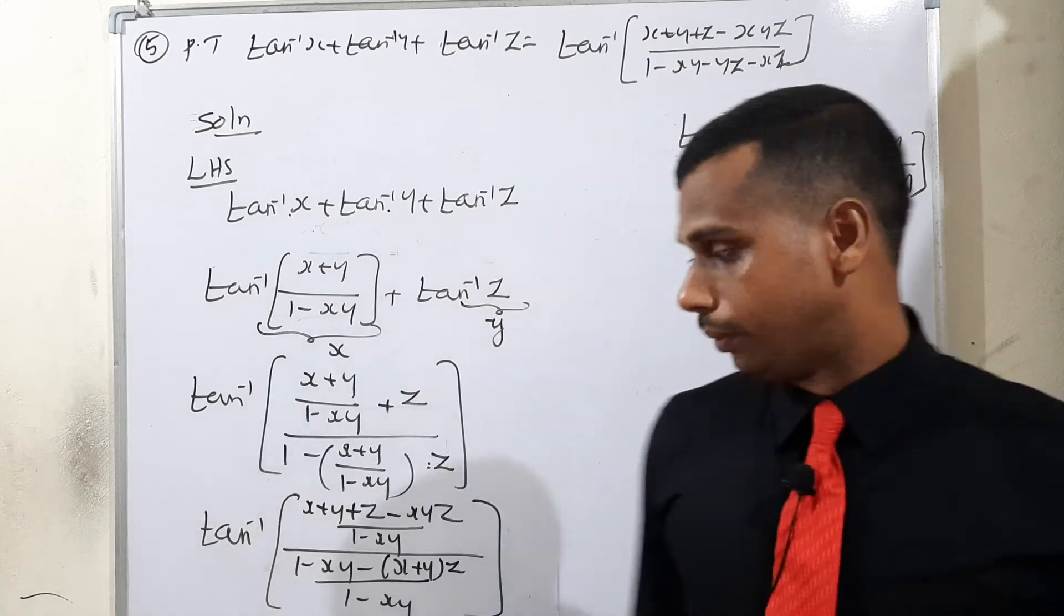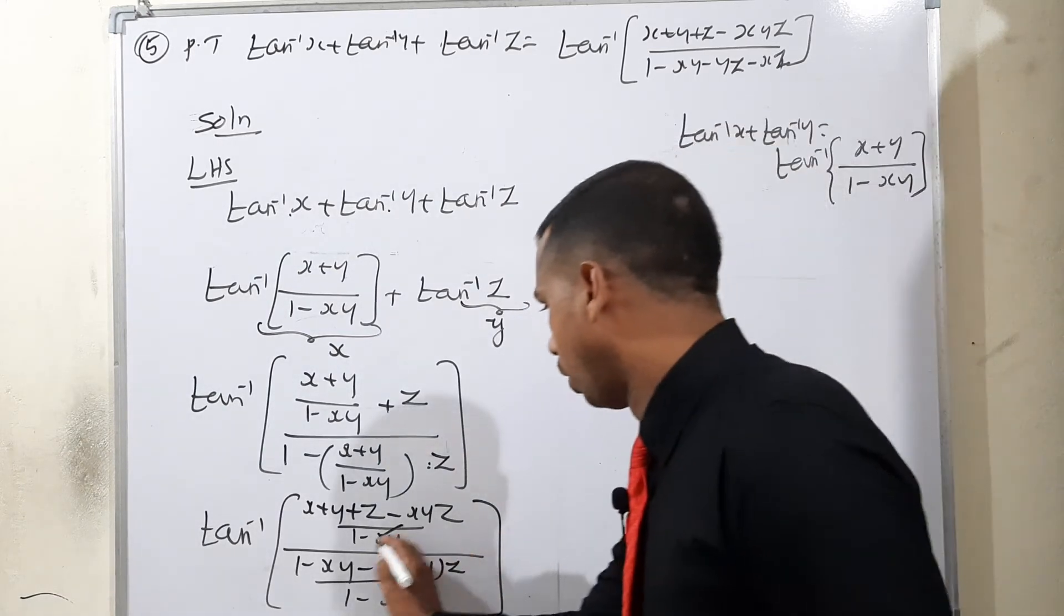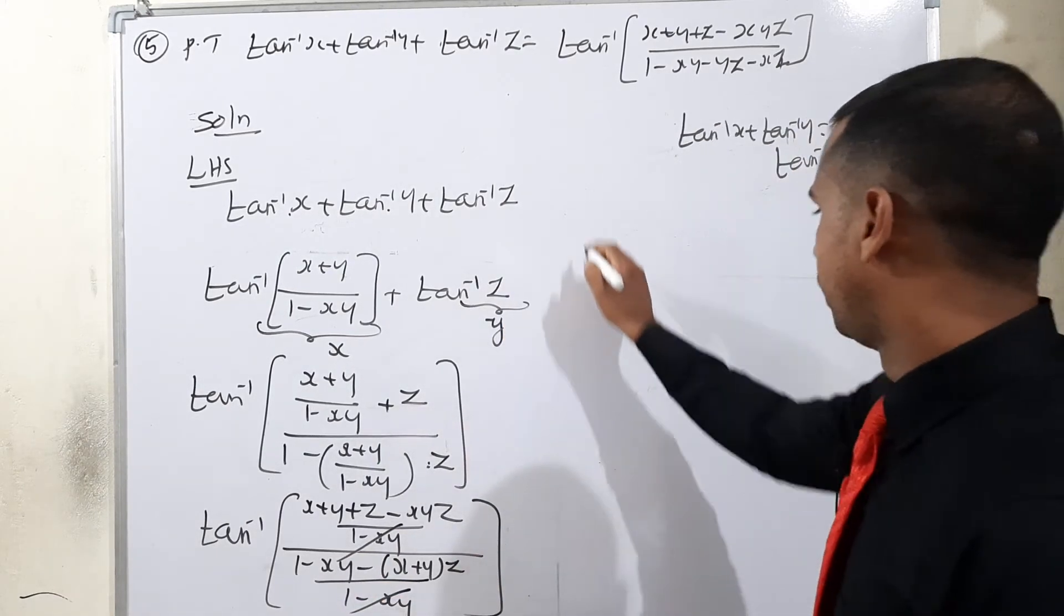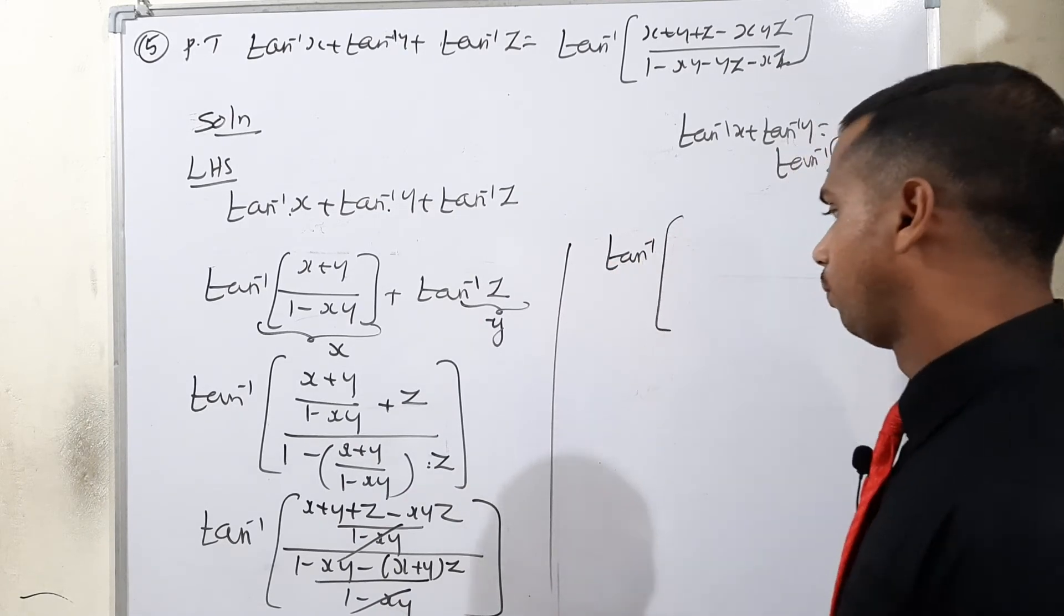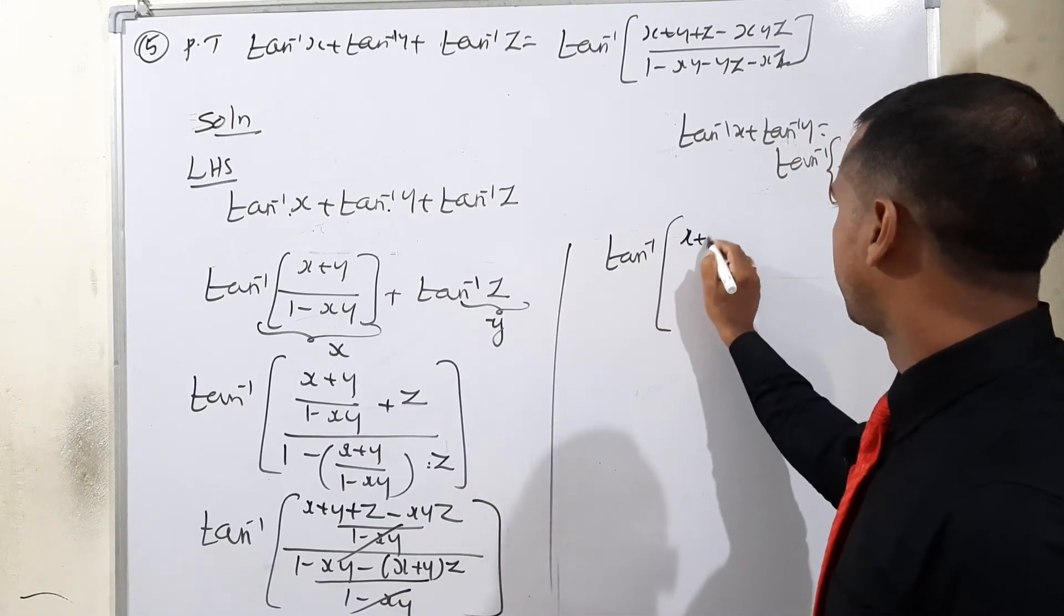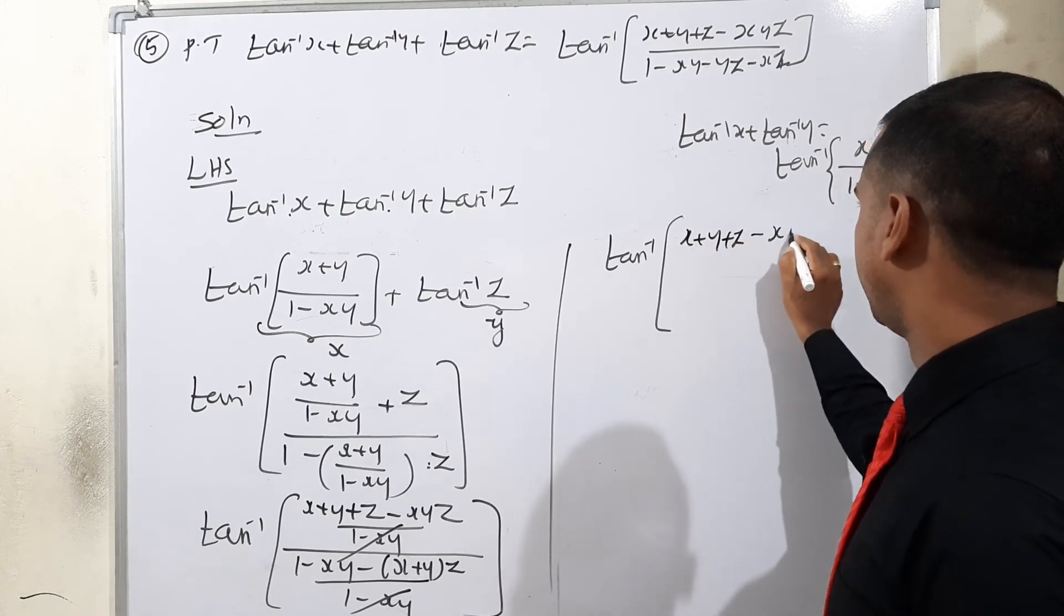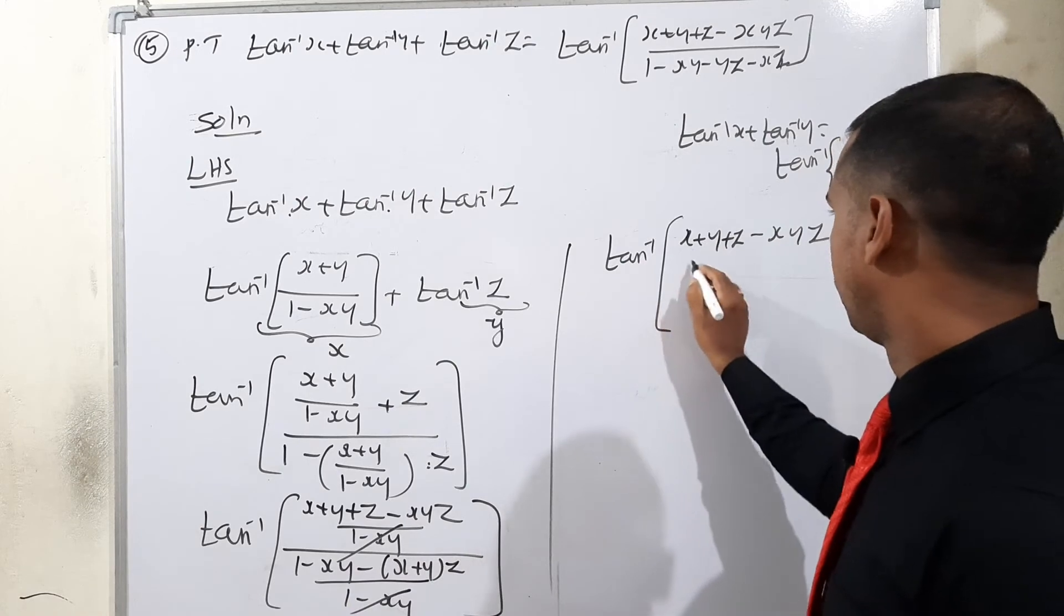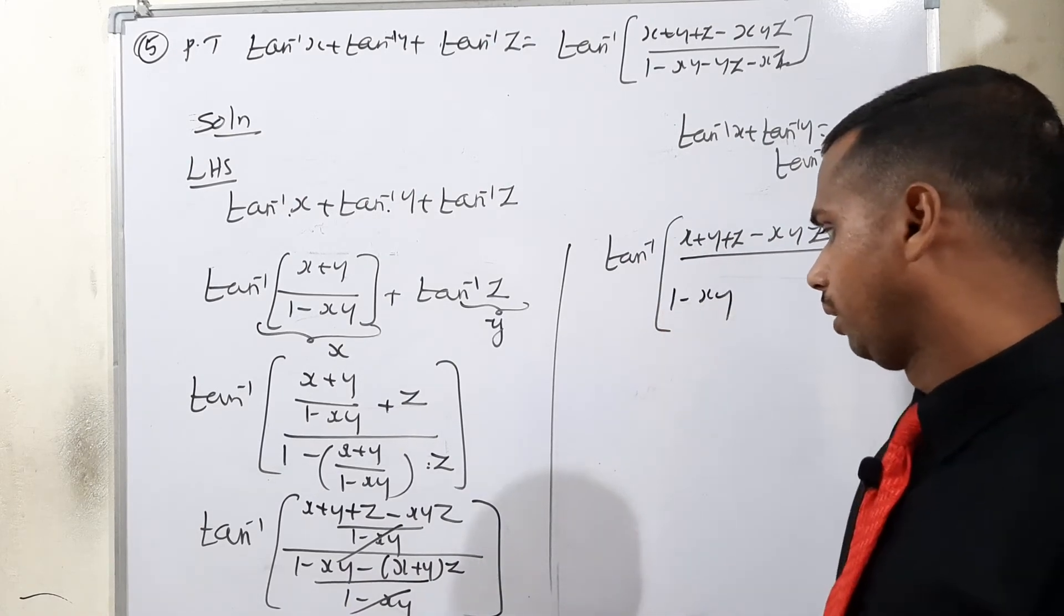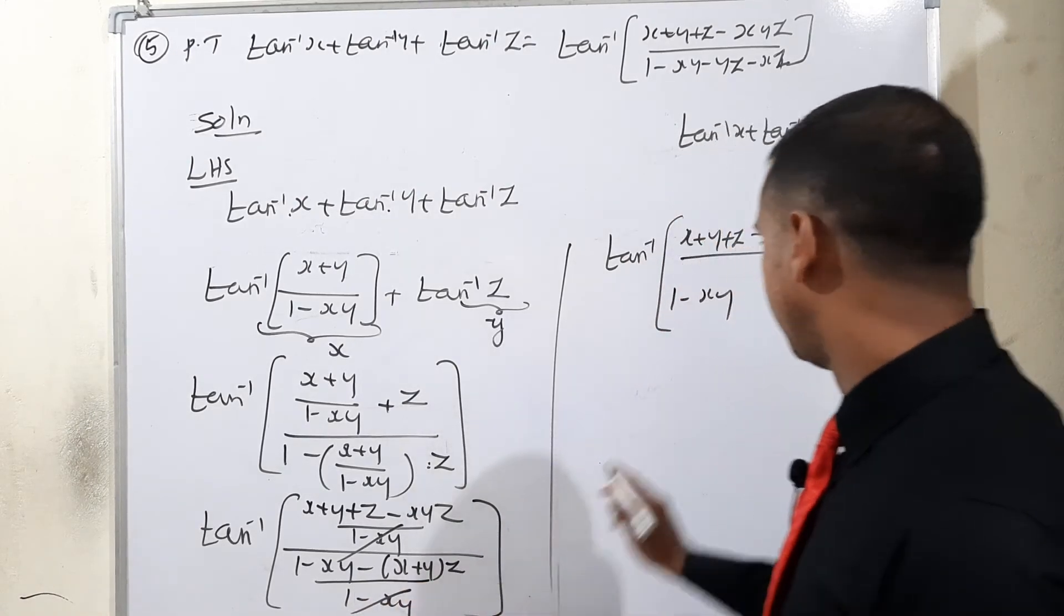1 minus xy cancel. After cancellation, tan inverse of numerator x plus y plus z minus xyz, then here denominator 1 minus xy minus xyz.